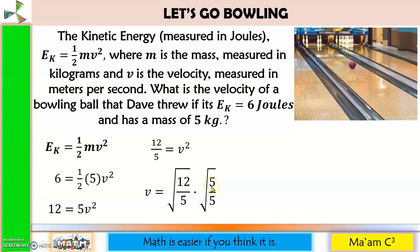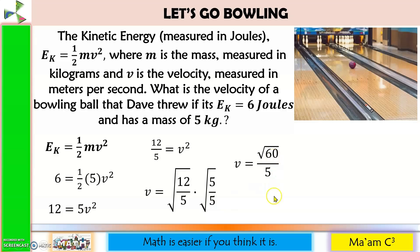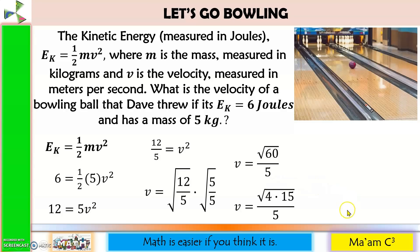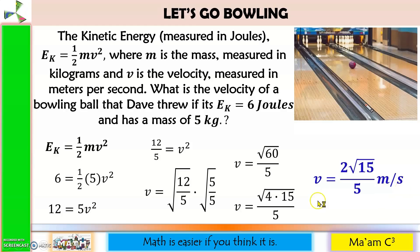12 times 5 is 60, giving square root of 60 in the numerator. Square root of 5 times square root of 5 is 5 in the denominator. 60 can be expressed as 4 times 15, and the square root of 4 is 2. Therefore, v equals 2 square root of 15 over 5 meters per second. This is the velocity of the bowling ball that has 6 joules of kinetic energy and a mass of 5 kilograms.